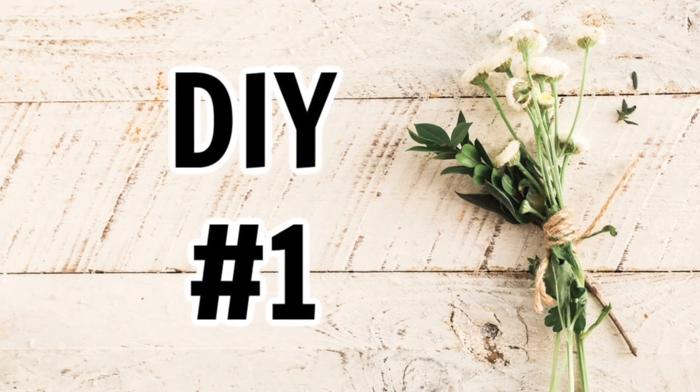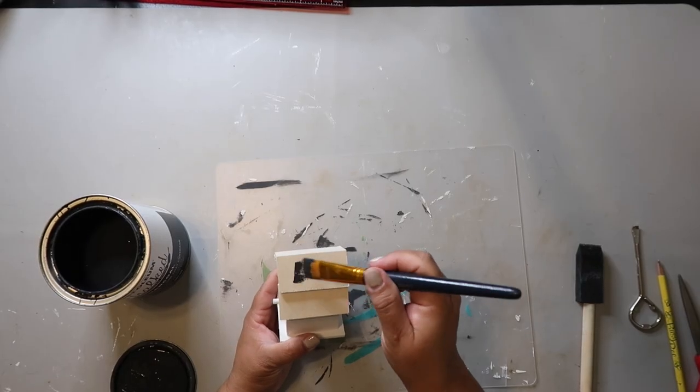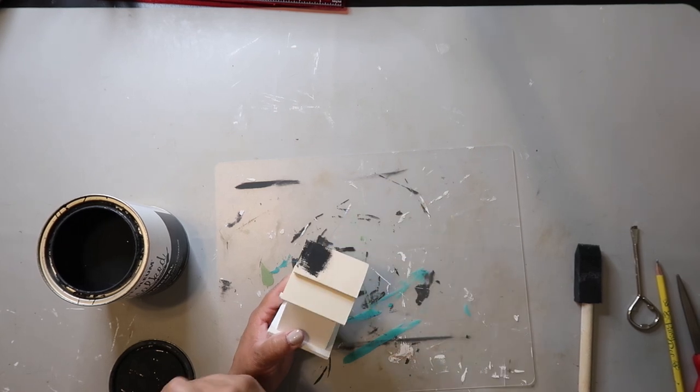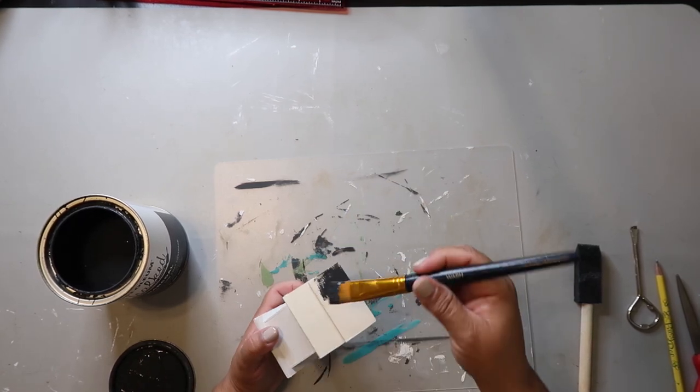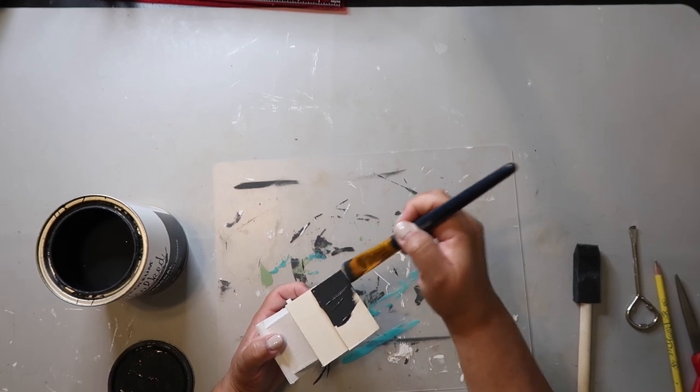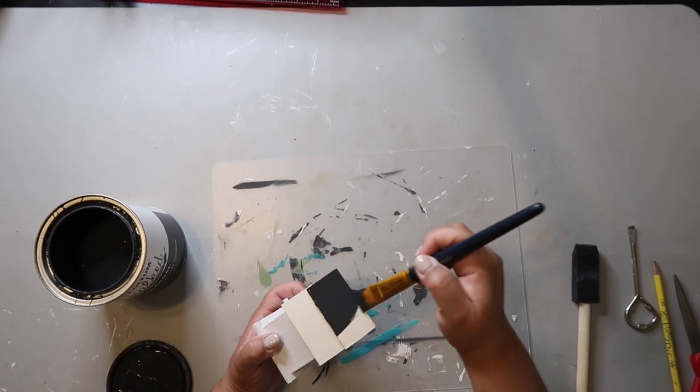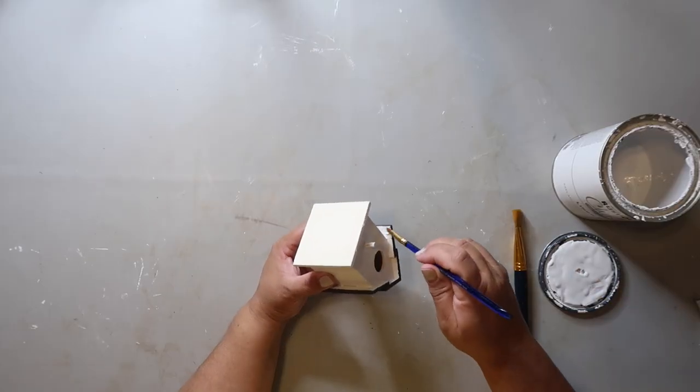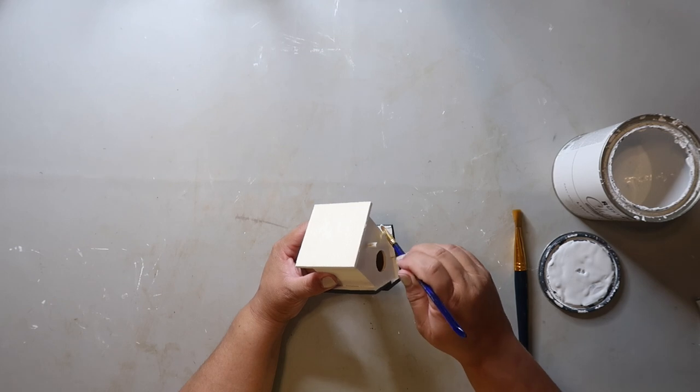DIY number one. I have painted the bottom half of this birdhouse with Rust-Oleum's chalked ultramat paint in the color linen, and now I'm painting the top of it with Rust-Oleum's chalked ultramat paint in the color charcoal. I did go back in with that linen color to touch up a few spots that I hadn't painted.